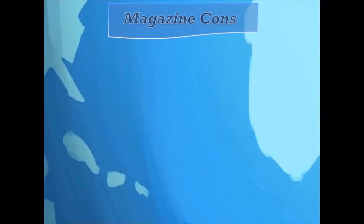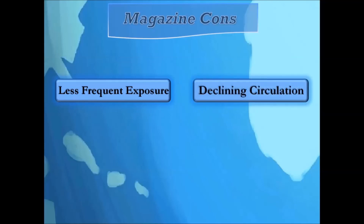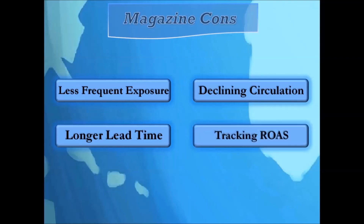Magazine cons: less frequent exposure — if you're advertising in a monthly magazine, by the time the next issue rolls around readers probably don't recall seeing your ad, making your campaign less effective. Declining circulation and readership — just like newspapers, fewer and fewer people are reading magazines. Longer lead time — it could take a few months before your ad is published. Tracking ROAS — it's hard to tell where your customers are coming from.